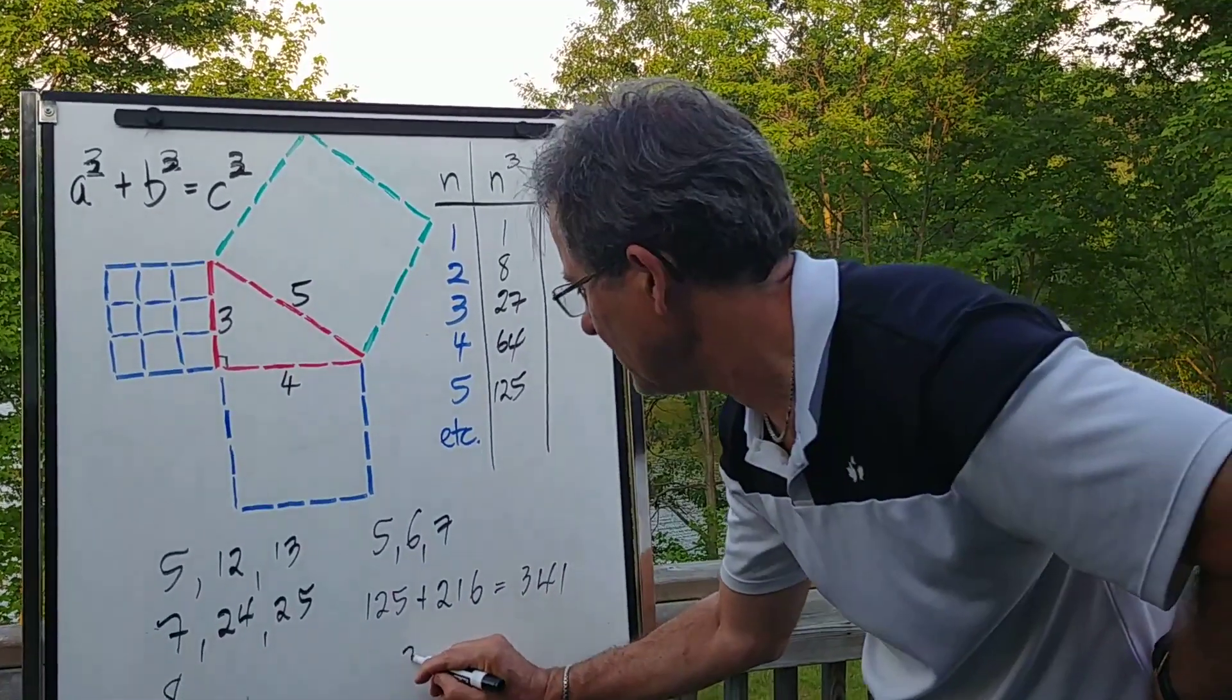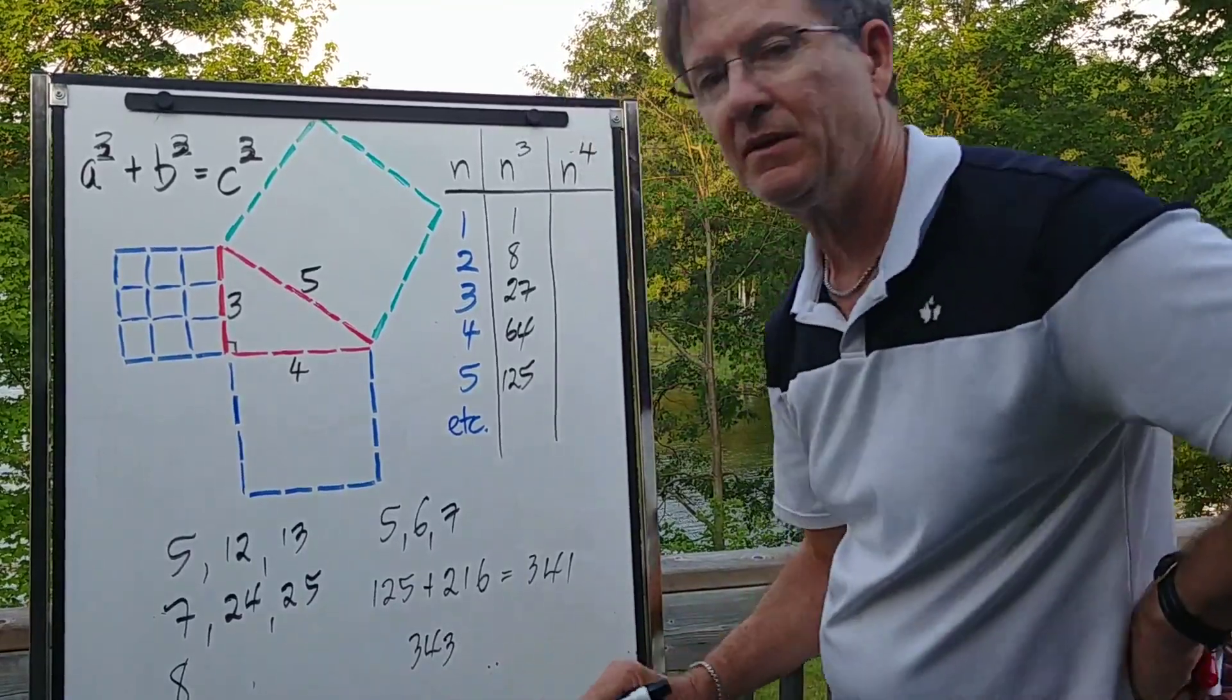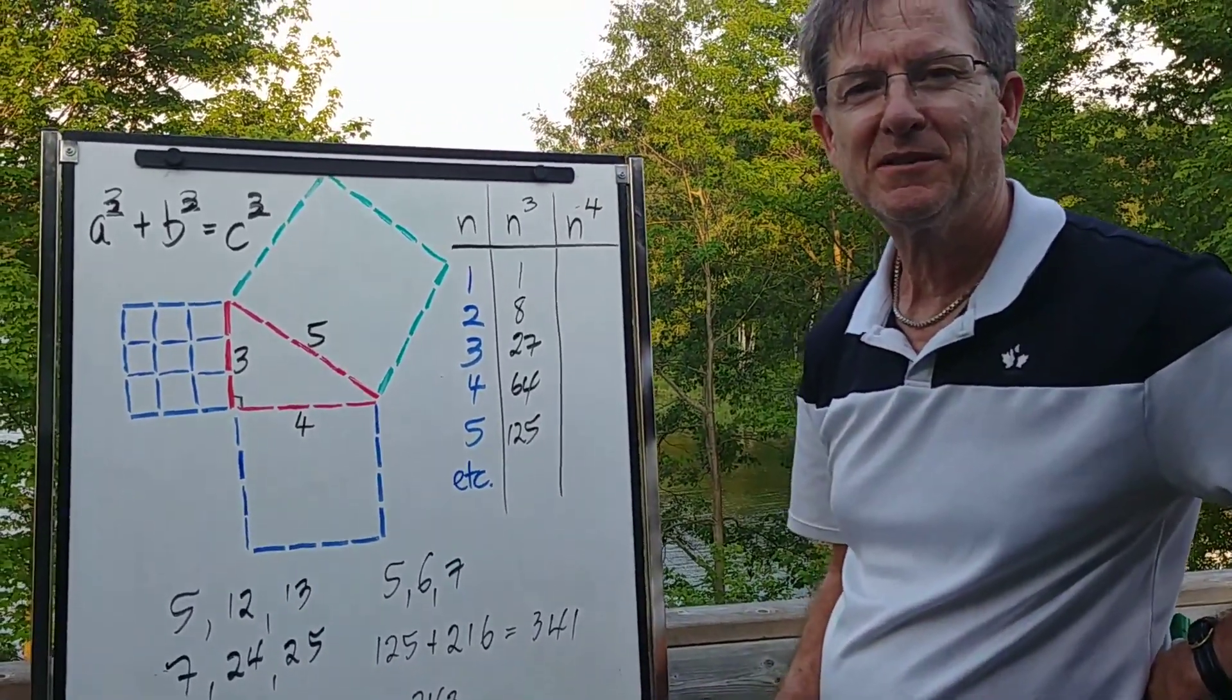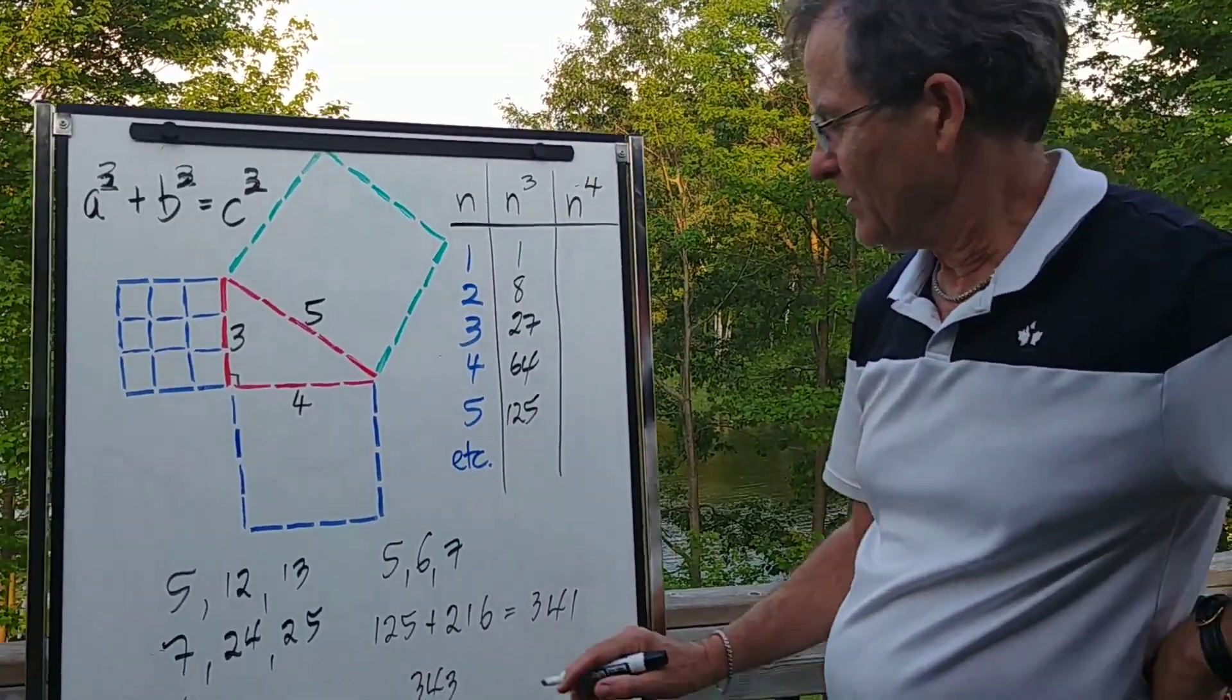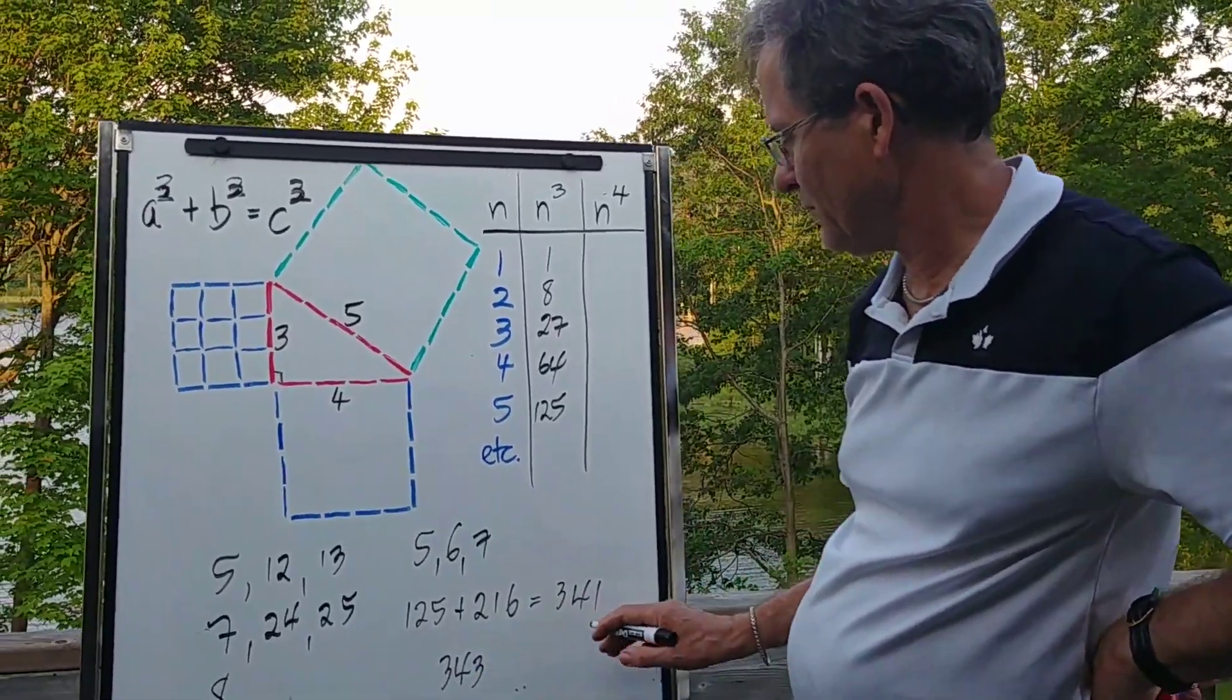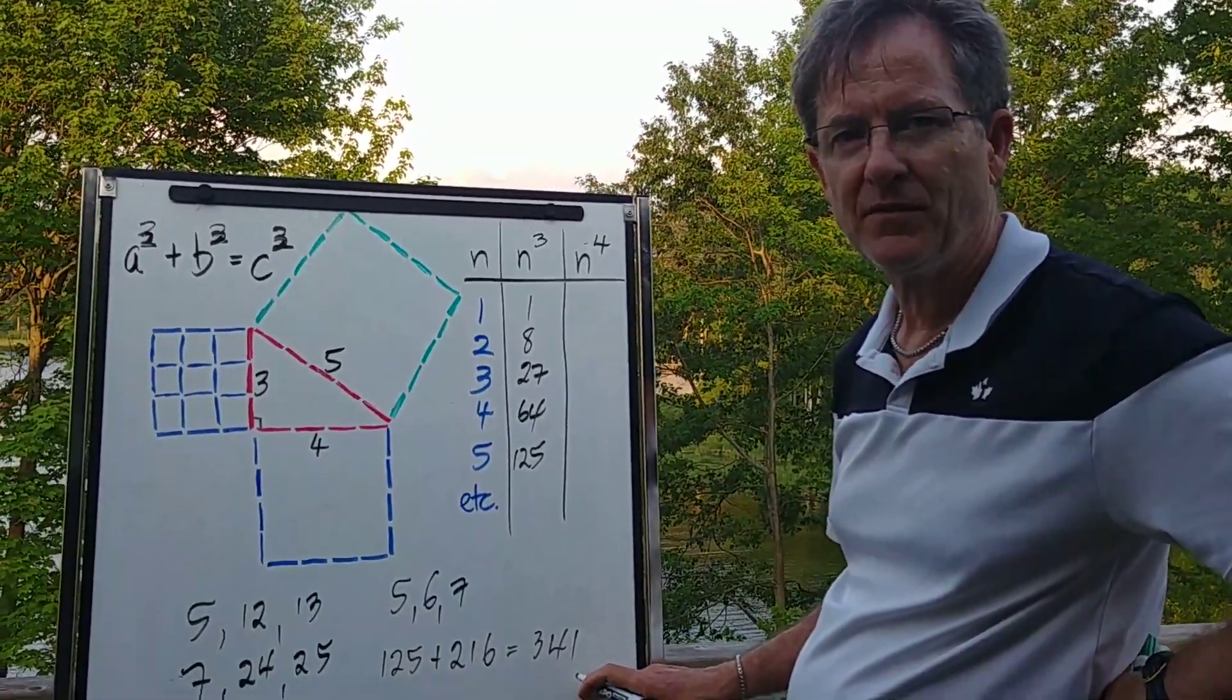And 7 cubed is 343. So close, but no cigar, as I always say. So I want you to try to see if you can find ones that work for the cubes.